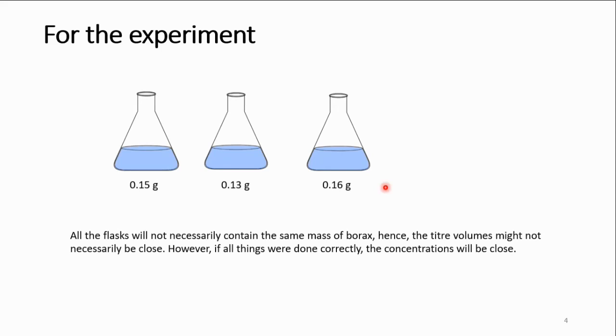Why is all this important? Why am I telling you all of this? Well, you have to note that not all the conical flasks will contain the same mass of borax, and therefore, they will not contain the same number of moles of borax. If they don't contain the same number of moles of borax, then they will not contain the same number of moles of hydroxide ions.